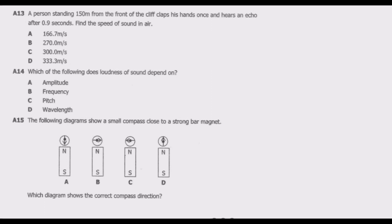Let us start with question 13. A person standing 150 meters from the front of a cliff claps their hands once and hears an echo after 0.9 seconds. Find the speed of sound. The question requires us to find the speed of sound.